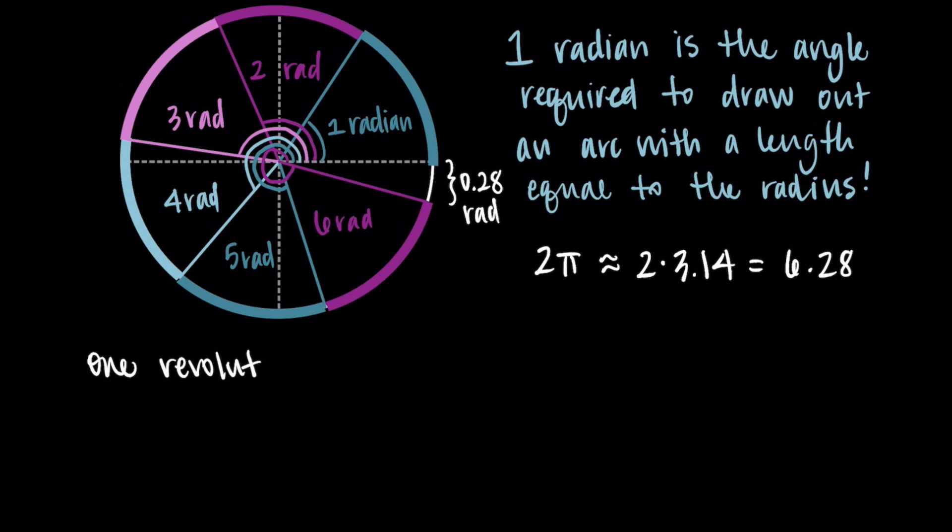So again, this isn't super formal. I'm not like proving that it's two pi for one revolution. But if we assume that is true, we know that it's two pi. This kind of makes sense that if we look at a radian as the measure of one radius in arc length, we can do six of them plus a little more gets us to that two pi.